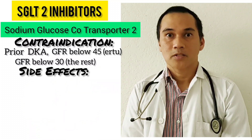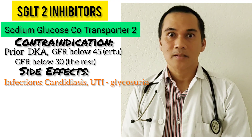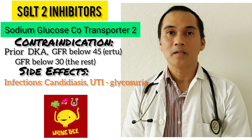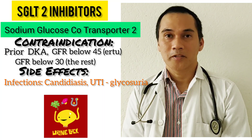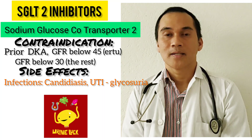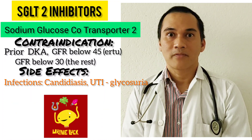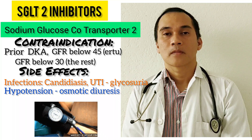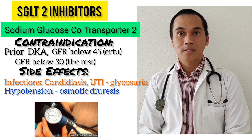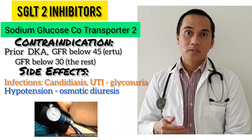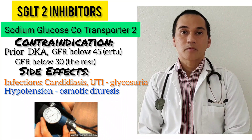Side effects include candidiasis, urosepsis, or UTI because there is a lot of sugar in the urinary tract, causing glycosuria — an environment that is favorable for pathogens to thrive. Hypotension can also occur because this medication promotes osmotic diuresis, especially when combined with diuretics, ACE inhibitors, and ARBs.